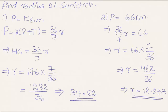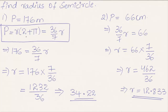To conclude, the perimeter of a semicircle is given by the formula r into (2 plus pi), which is equal to 36/7 into r. Hope you understood the concept. Do like and subscribe to vdchacademy.com. Thanks for watching, have a nice day.